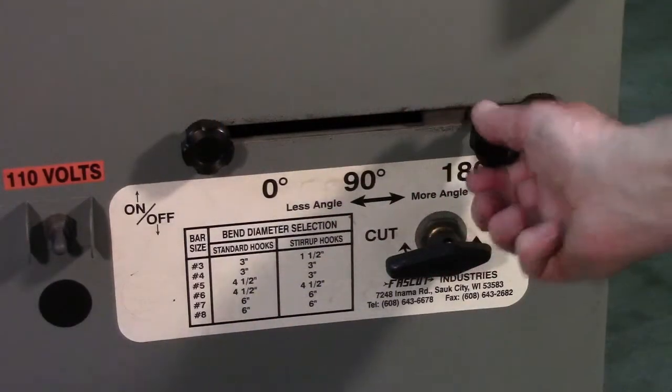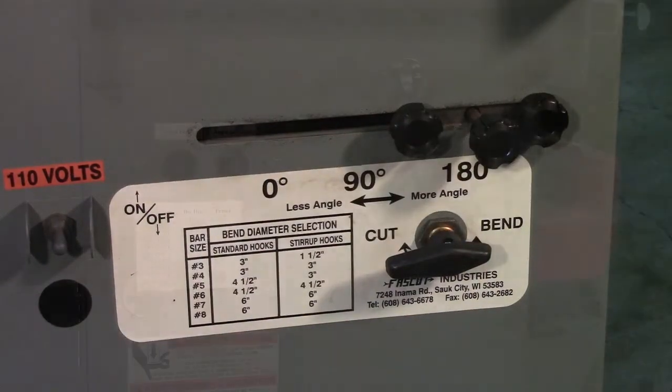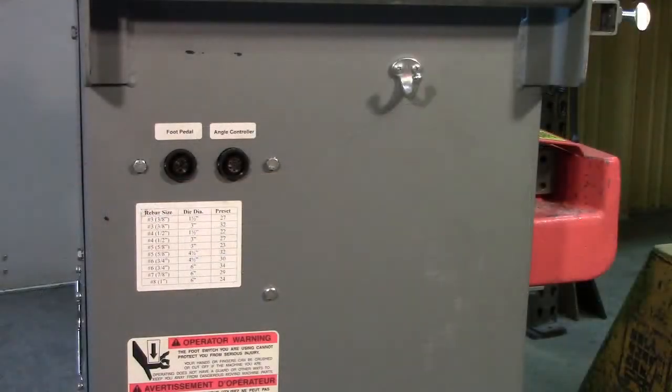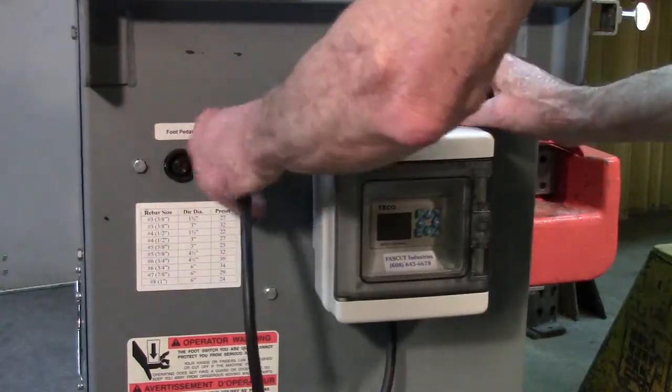To use the controller, first move the bend angle adjustment lever all the way over to the right. Move the stop against it and lock it in place. Now plug the controller into the jack on the side of the machine.